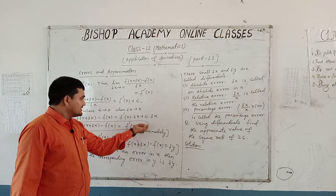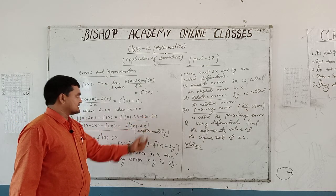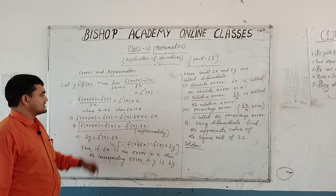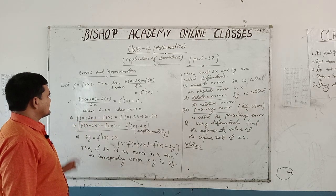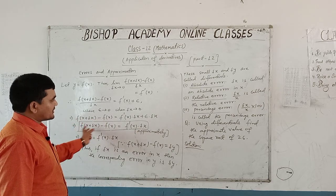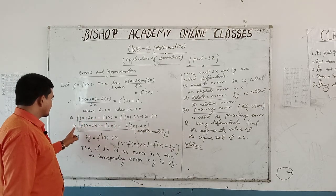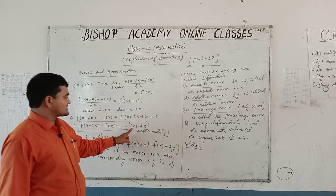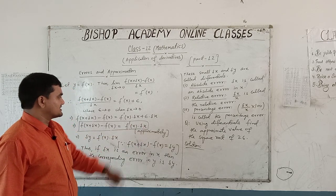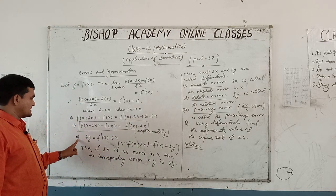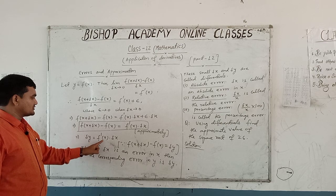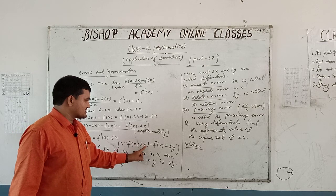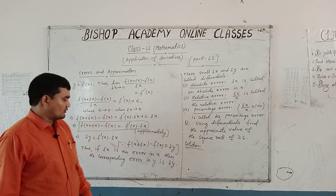When we neglect the epsilon·delta x term, f(x + delta x) minus f(x) is approximately equal to f'(x) into delta x. This implies that delta y equals f'(x) into delta x, where f(x + delta x) minus f(x) is equal to delta y.